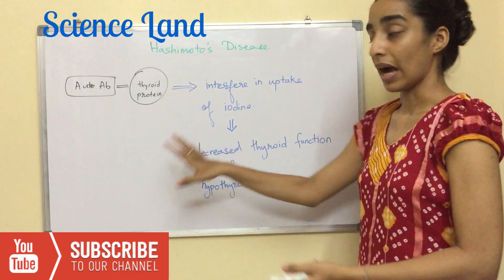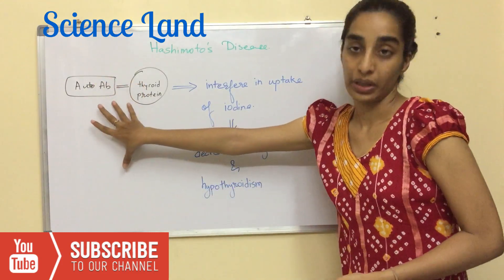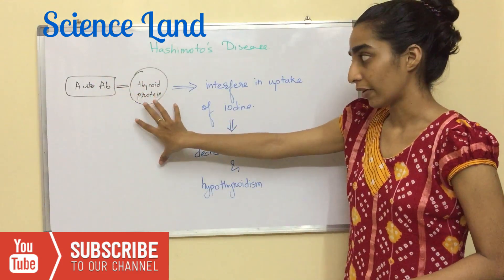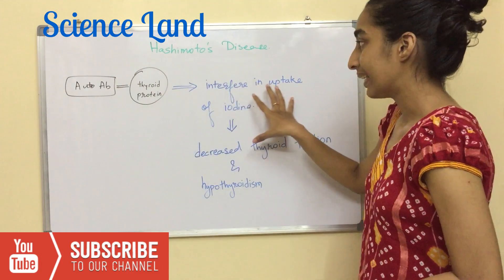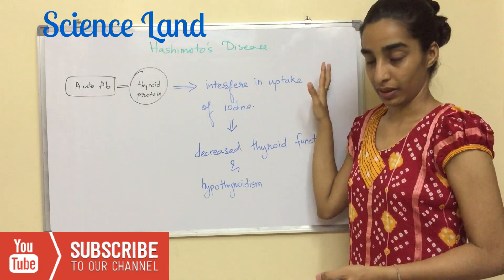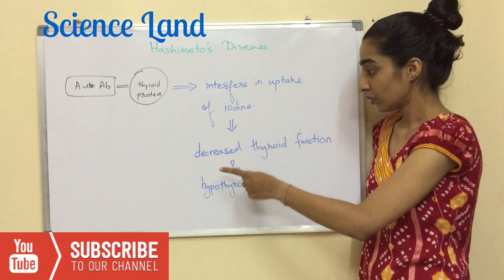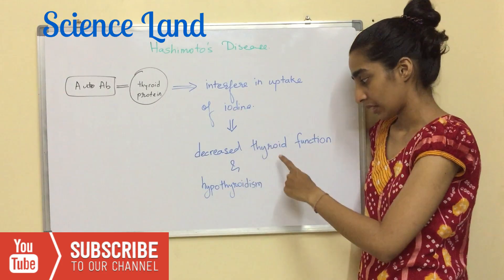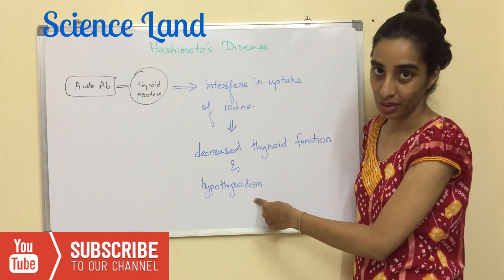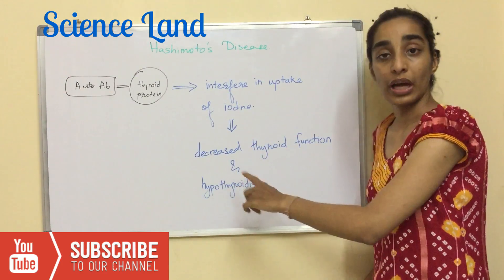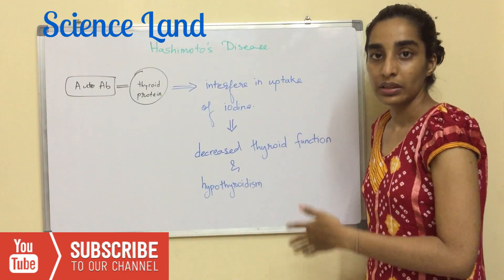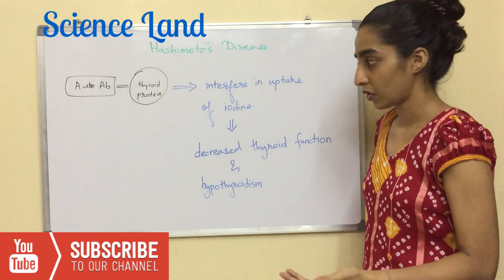When an antibody binds to a thyroid protein, it interferes with the iodine uptake, which further leads to decreased thyroid function and hypothyroidism. Hypothyroidism is the decreased production of thyroid hormones.